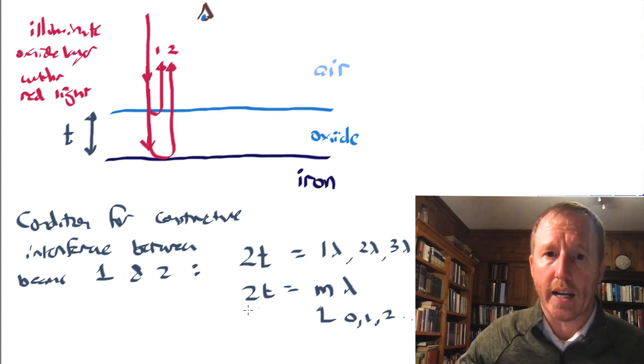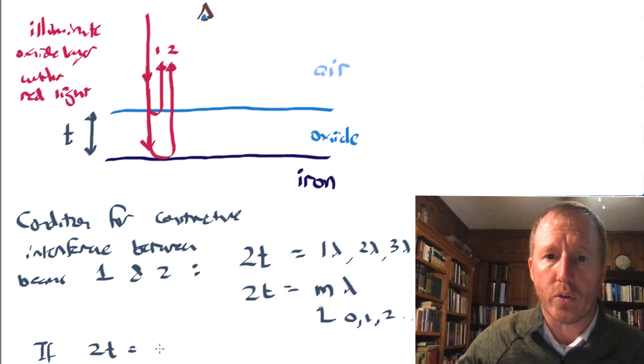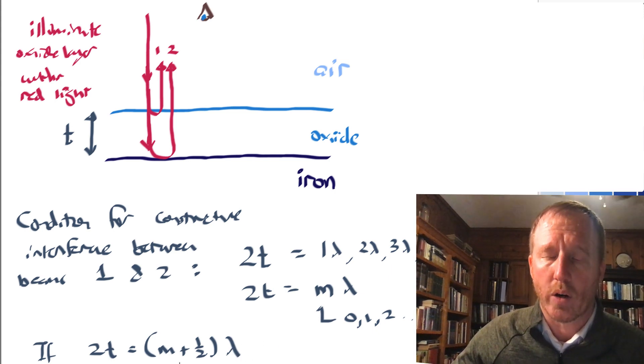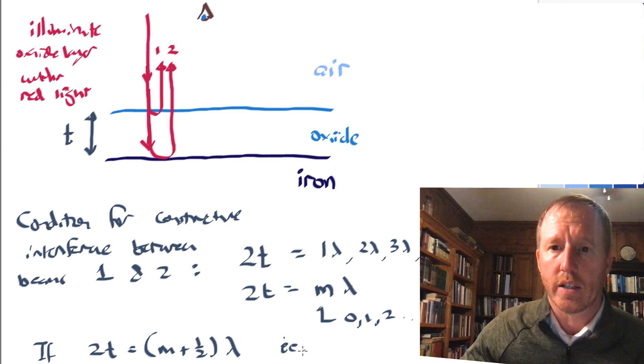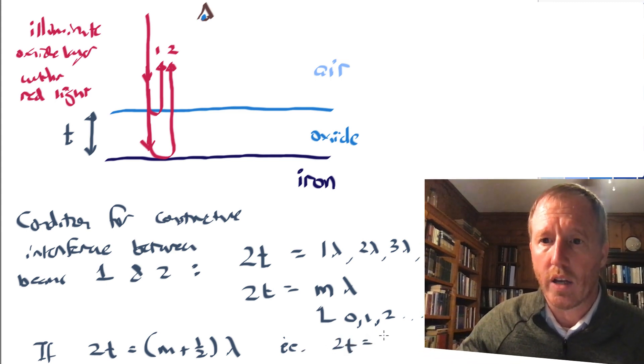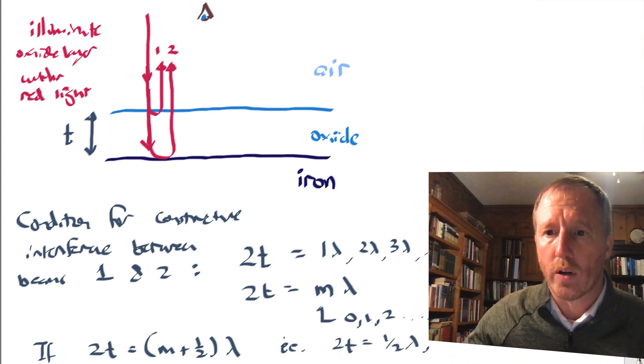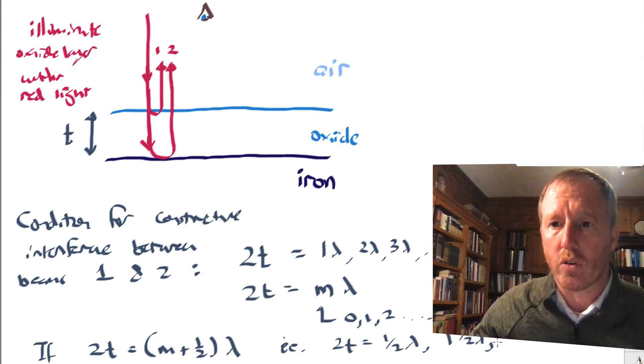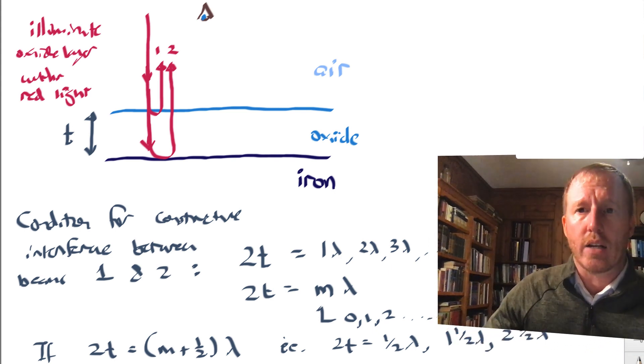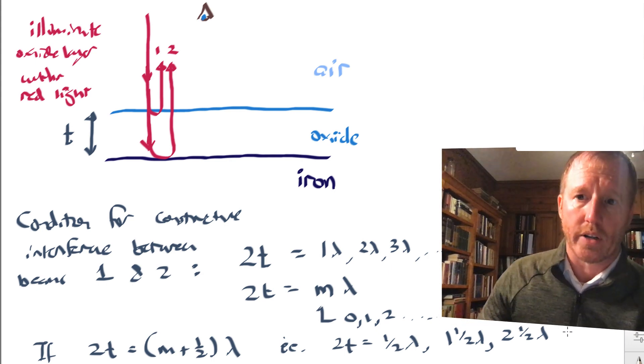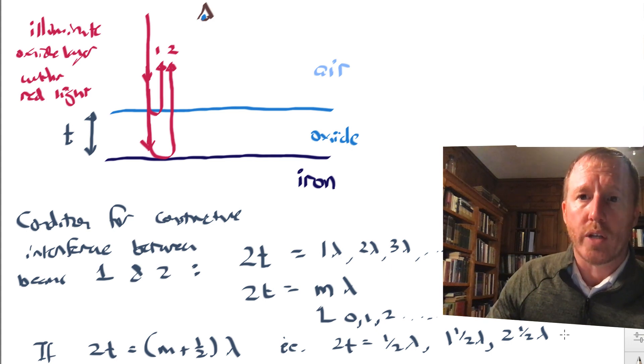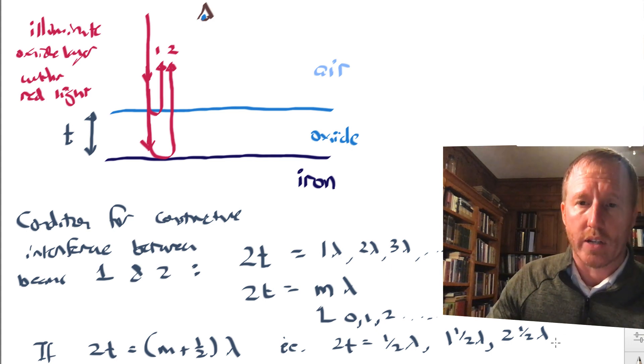If, on the other hand, if that extra distance 2T is equal to (M + 1/2) lambda, where again, M is zero, one, two, and so on, that is, the extra distance is a half of a wavelength, or one and a half wavelengths, or two and a half wavelengths, well, in that case, then rays one and two will be destructively interfering with one another, and it will appear dark when viewed from above, so the iron will appear black because of this oxide layer.